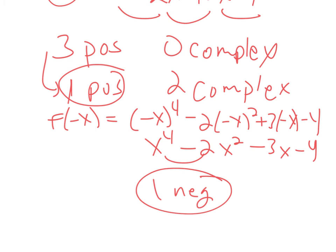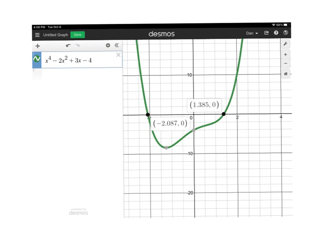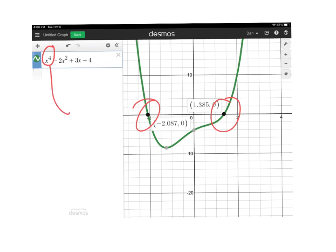Let me go out to Desmos, graph it, and we'll check it out. And, well, lo and behold, look at this. One positive, right? One positive root, one negative root, and fundamental theorem of algebra tells us there's got to be four zeros, so that tells me there's going to be two complex. So, that's just very cool that we were able to figure that out without too much work. It's not always this clean cut, folks.